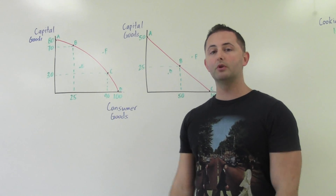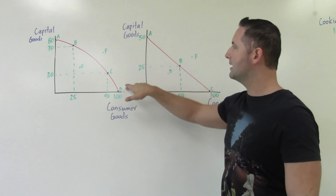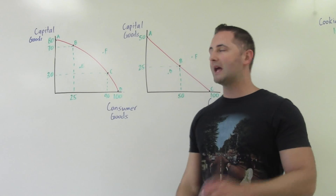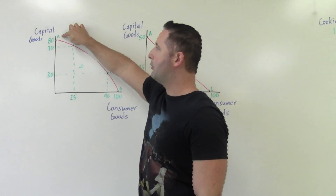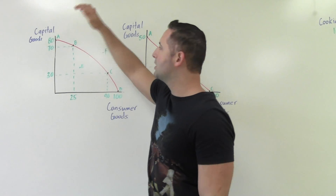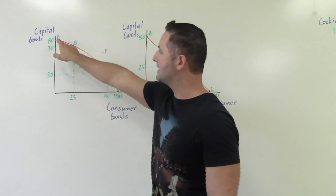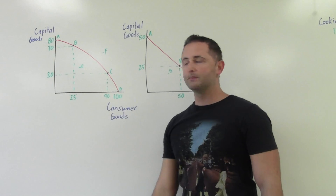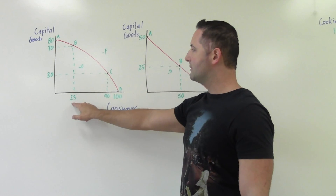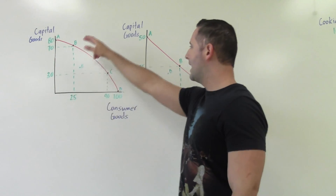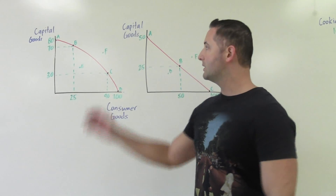Anywhere along this curve — points A, B, C, and D on the first one, and A, B, and C on the second — the economy can produce any combination of goods. For instance, point A represents the economy using all resources to make as many capital goods as possible with zero consumer goods, so we're at 80 capital goods and zero consumer goods. Moving to point B, they're making 70 capital goods and now 25 consumer goods. You can go all the way to point D, where they make all consumer goods and no capital goods.